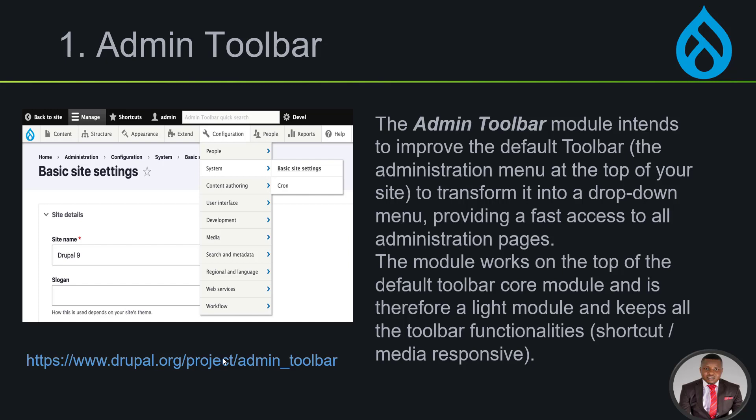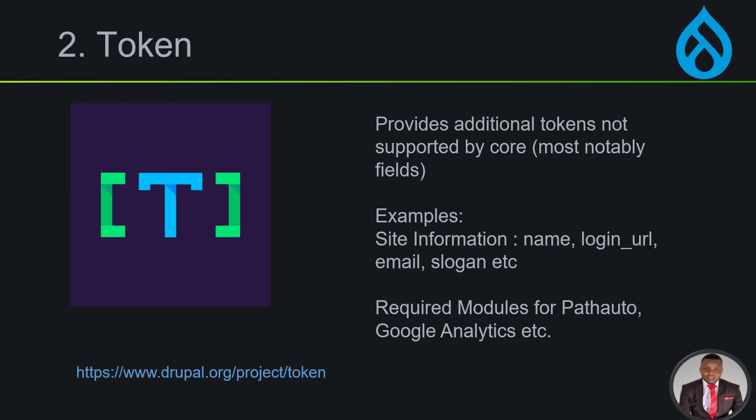The installation link is here. We'll download and install all these modules. The next one we'll be looking at is called Token. If you're developing Drupal modules or themes, you can use Token to call in functionalities that already exist in Drupal, such as the name, login URL, email, and slogan. Token is also a required dependency module for other modules such as Pathauto and Google Analytics, so it's good to install it upfront.